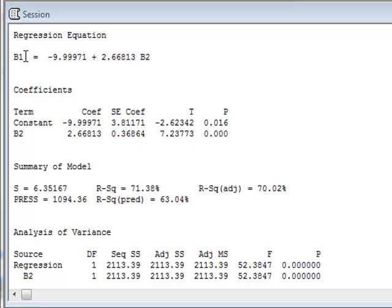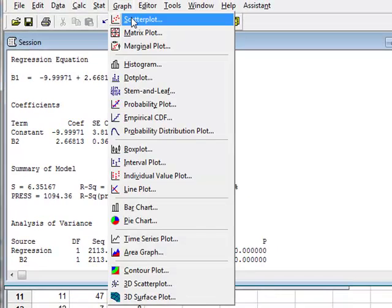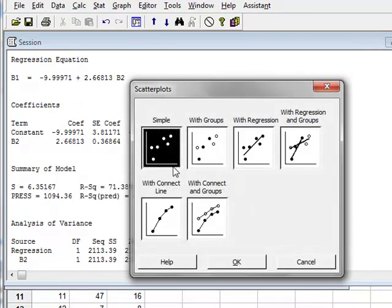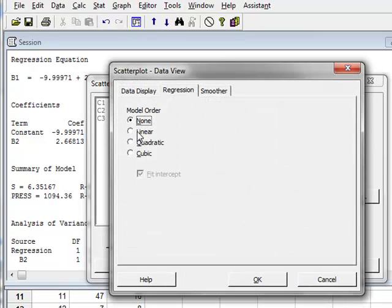We can look at this on an X-Y graph by using a scatterplot. Simple, with the Y variable B1 and the X variable B2. Under data view we will draw the best fit straight line.